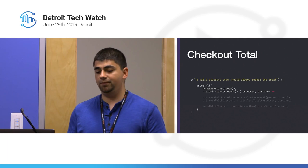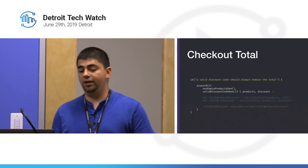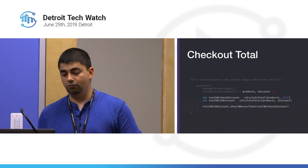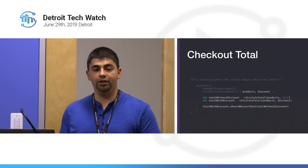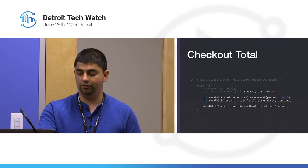One more subproperty: a valid discount code should always reduce the total. We generate a non-empty list of products and a valid discount, then run calculateTotal with no discount (null) and again with the valid discount using the same products. We assert that the total with the discount should always be less than the total without the discount.